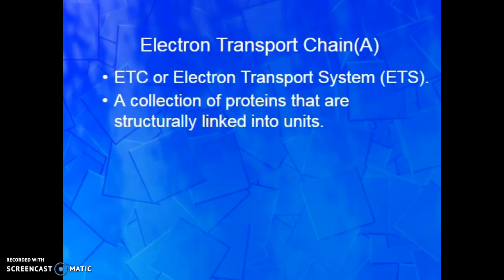The electron transport chain is the third part of cellular respiration. It's essentially a whole bunch of proteins on the inner membrane of the mitochondria. We're going to move things, manipulate active and passive transport to turn gears, drive pumps, and create energy. We'll pick up with this in lecture two.